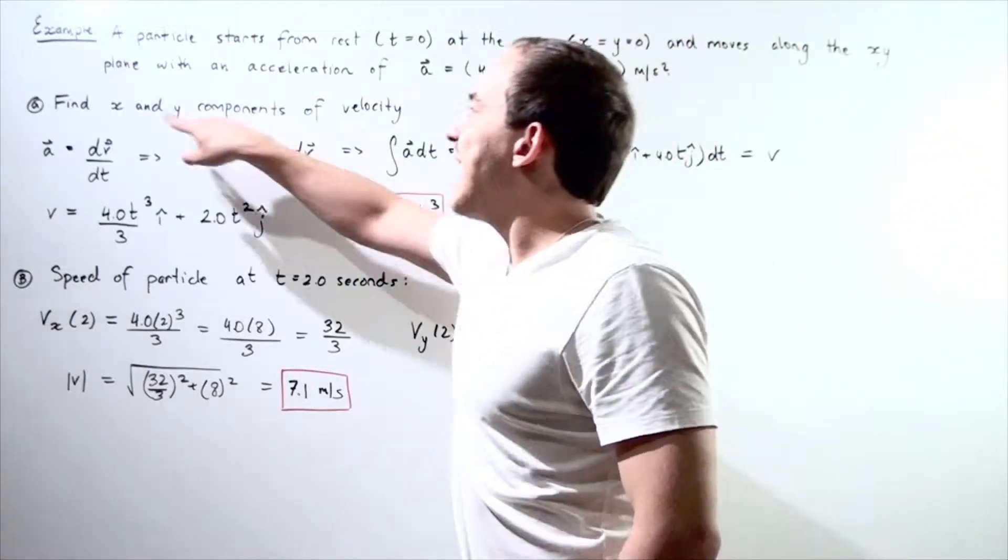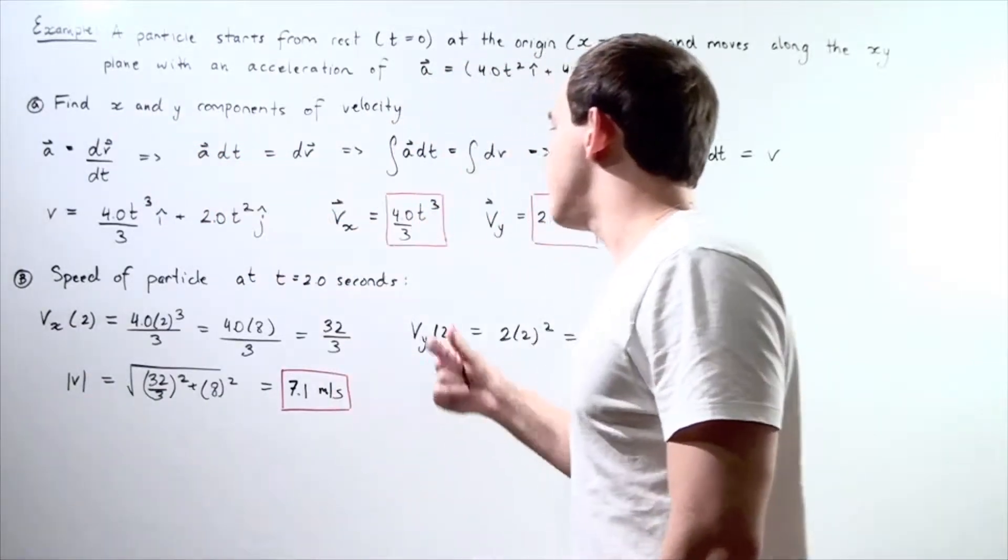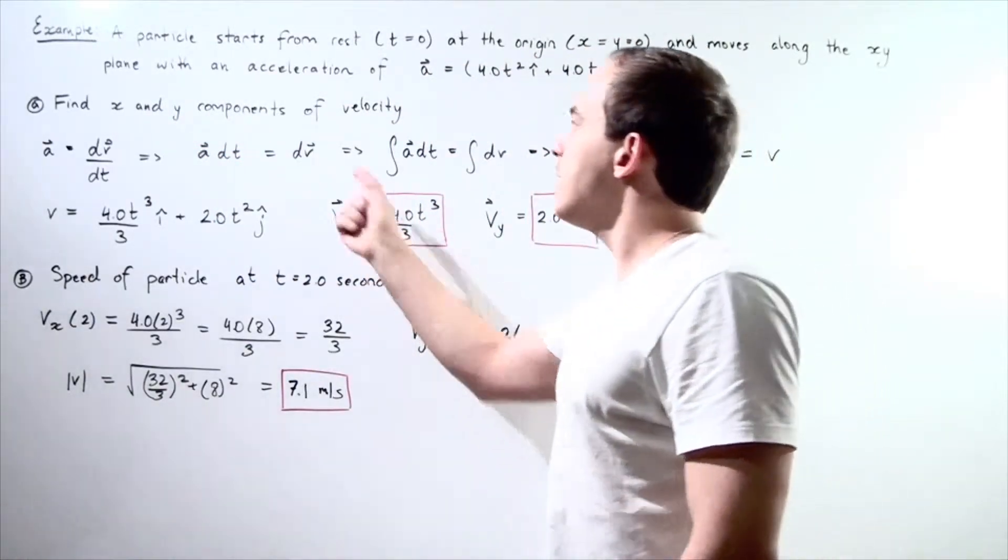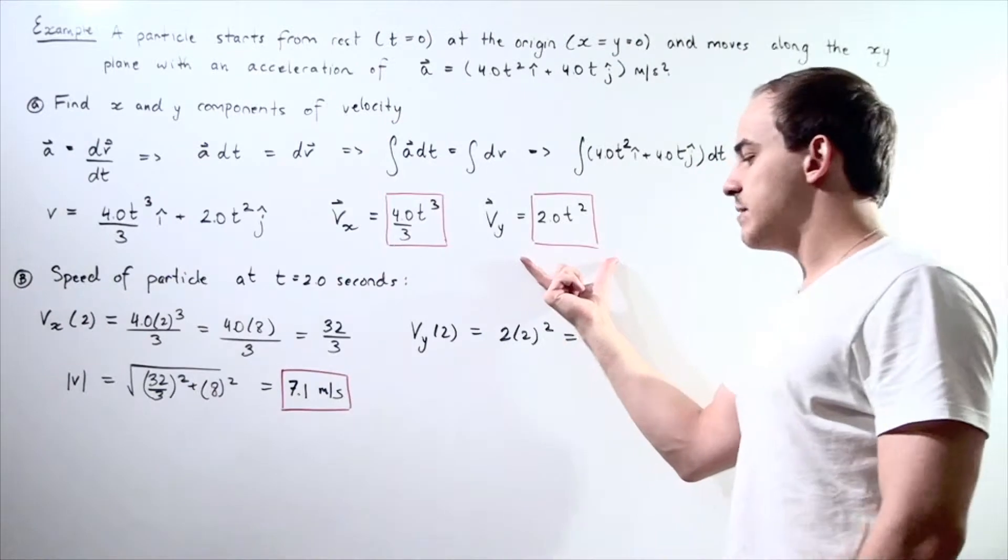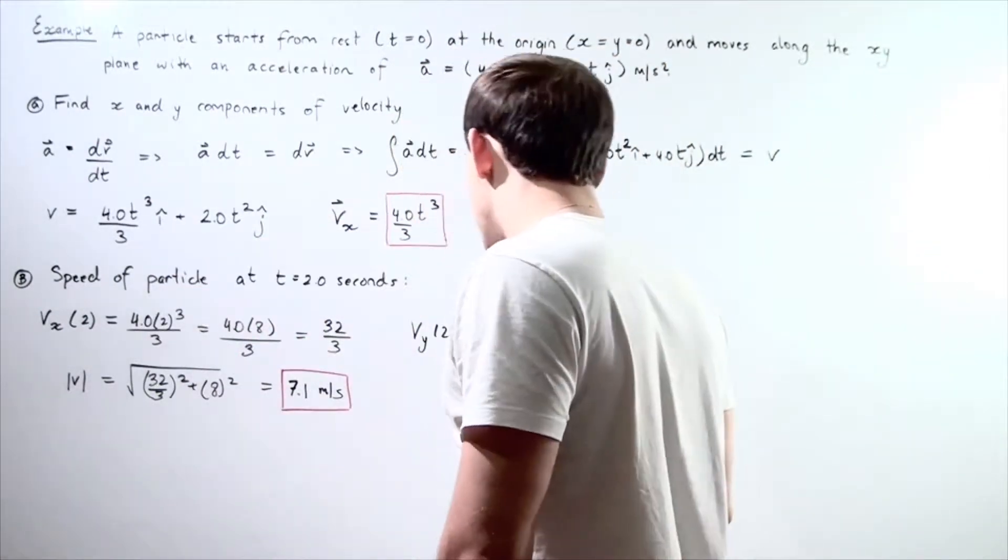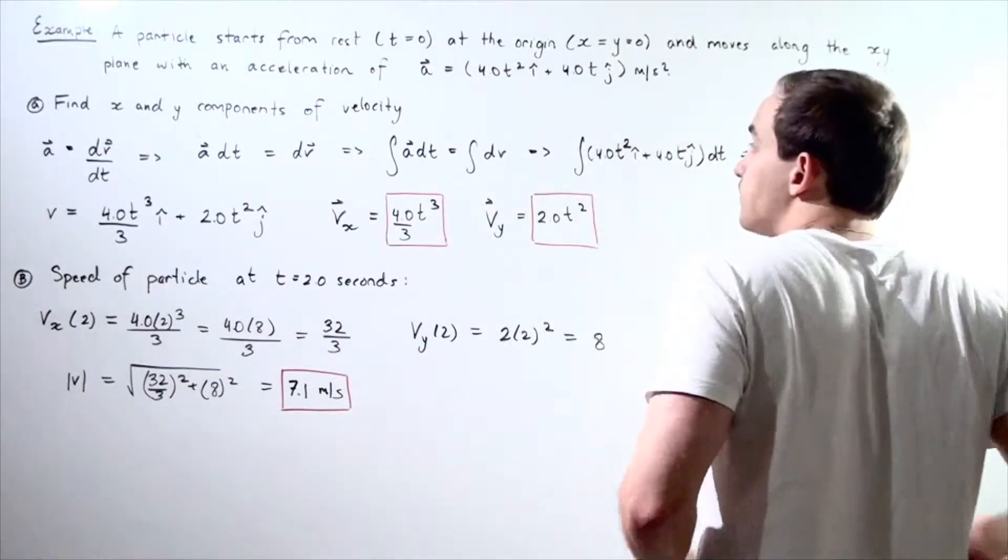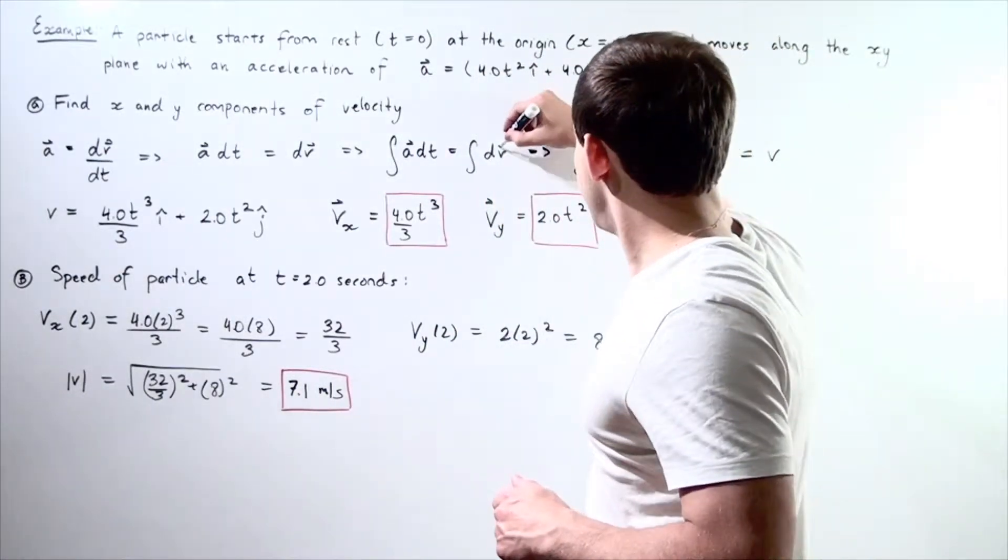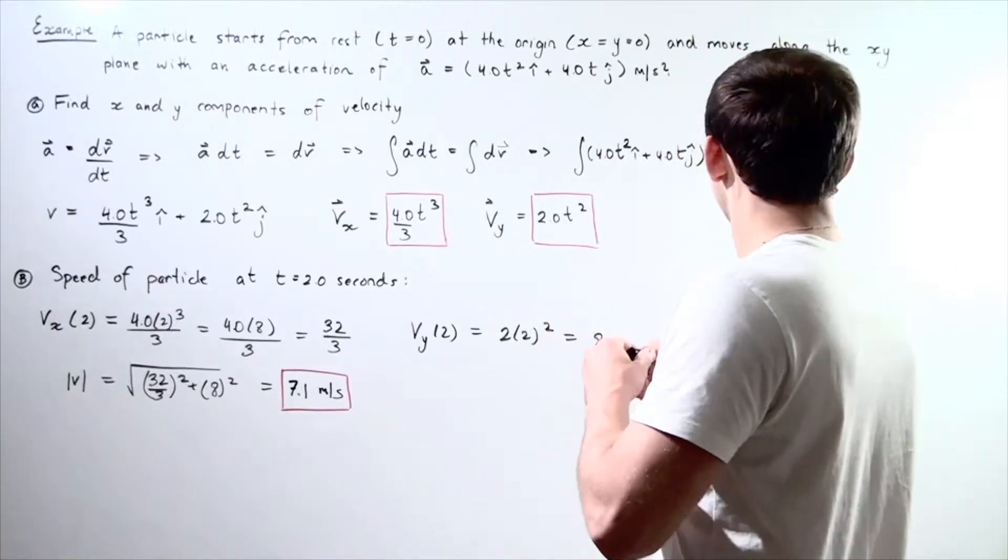It turns out that my x component is given by the following equation. And my y component is given by this equation, which we simply obtained from this velocity function equation.